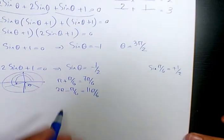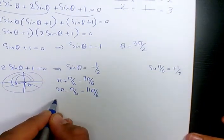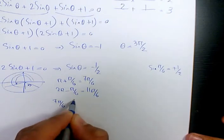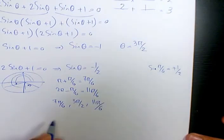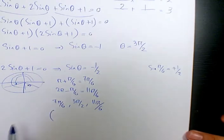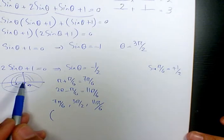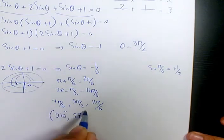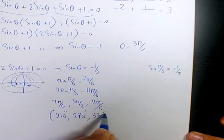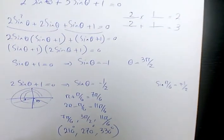So we have three answers: 7π over 6, 3π over 2, and 11π over 6. In terms of degrees, these are 210 degrees, 270 degrees, and 330 degrees. These are the three answers to this question.